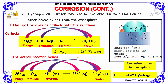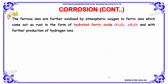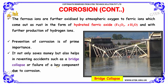The overall reaction is: Fe + O₂ + H⁺ → Fe²⁺ + H₂O. The ferrous ions are further oxidized by atmospheric oxygen to ferric ions, which come out as rust in the form of hydrated ferric oxide (Fe₂O₃·xH₂O), with further production of hydrogen ions.